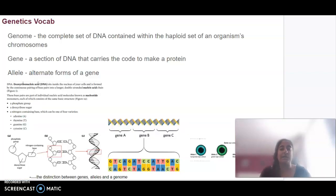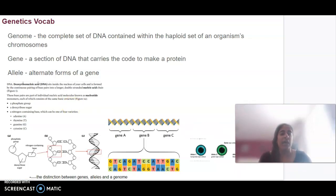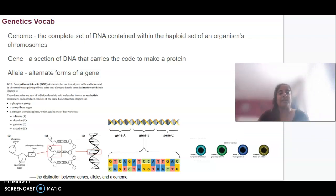We'll make a start with some vocab you need to be familiar with. A genome is basically the complete set of DNA that's contained within a haploid set of an organism's chromosomes. A gene is a section of DNA that carries the code.